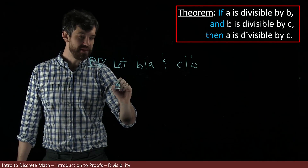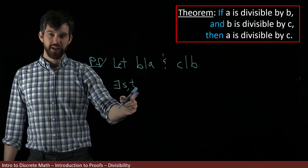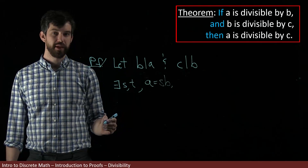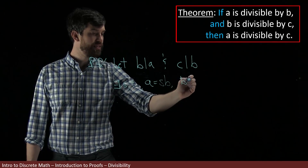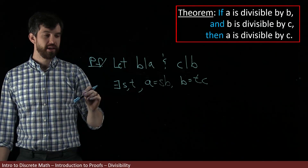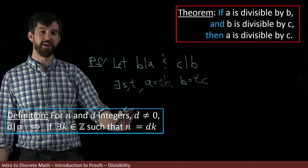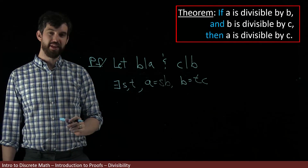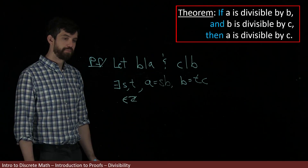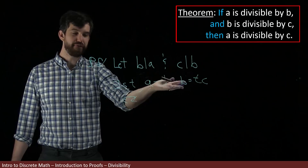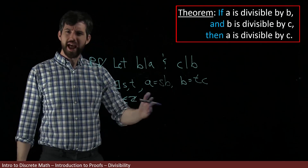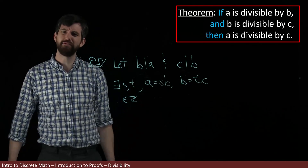For both components of my hypothesis I make an existential claim. So I am claiming there exist integers s and t such that a equals s times b and b equals t times c. That's my claim. I've stated my assumptions and applied the definition to rewrite them. I should note that s and t both need to be integers. Now I need some manipulations to reach my conclusion, but let me first do some scratchwork.